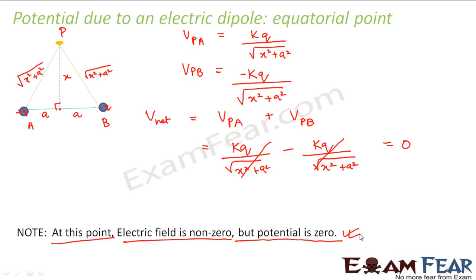This is a live example. We ourselves have calculated the value of electric field due to an electric dipole at equatorial point. If you want to see, you can refer to the videos of the previous chapter. So there you can see that we have ourselves calculated the electric field and it came out to be non-zero, but in this case we saw that the potential is always zero.